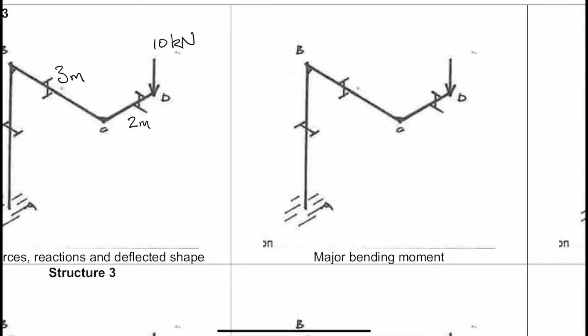And as you can probably imagine, it starts from 0 at D, increases to 20 kilonewton meters. Let's do the units down here, so 20 kilonewton meters at C. Okay, so CD is going downwards.